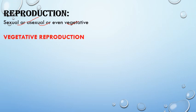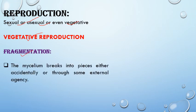Firstly, we'll discuss vegetative reproduction. In vegetative reproduction, any plant part can give rise to a new fungus. Any part of the thallus, either by accidental breakdown or by death and decay, can give rise to a new thallus. The first method of vegetative reproduction is fragmentation, where mycelium breaks into small pieces, either accidentally or through external agencies.